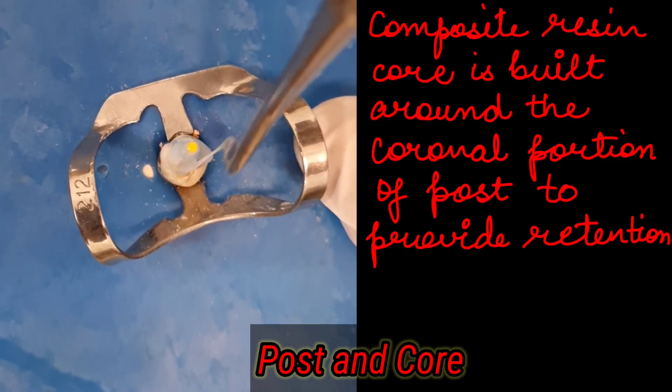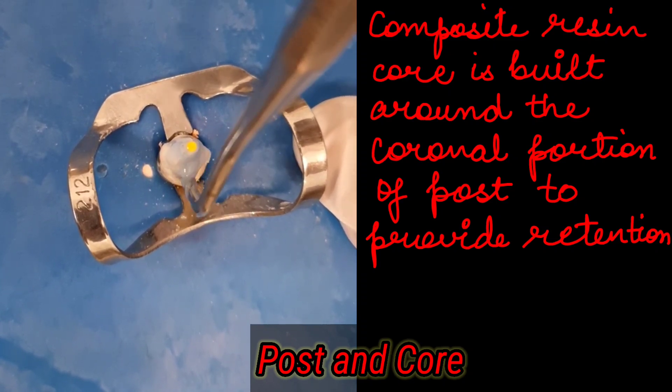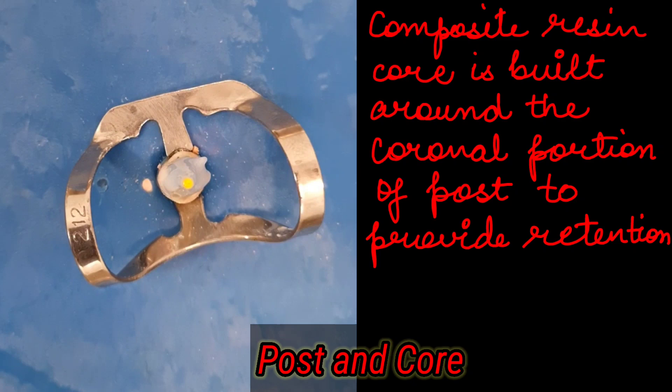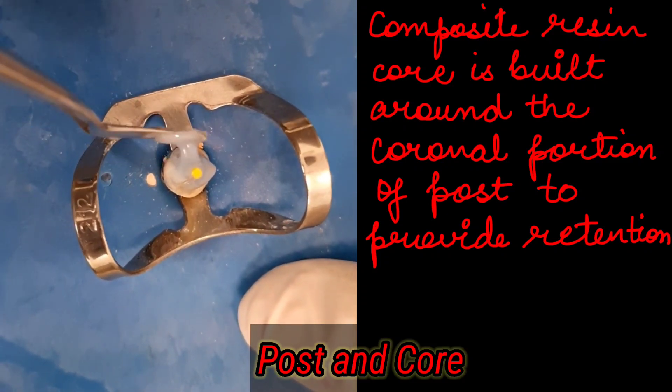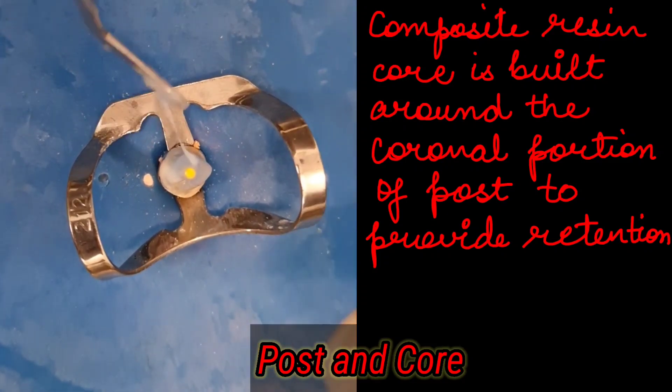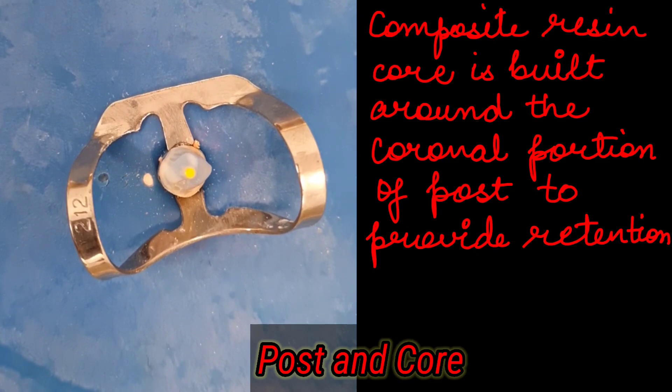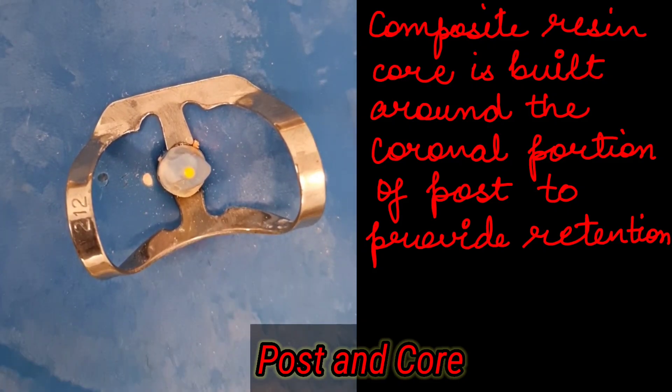Post and core are placed in the teeth that have already had the root canal and then only for those who have large portion of natural tooth structure missing we go for post and core. You can either use the custom or in this video we are demonstrating a fiber post which is a very simple procedure and very less time consuming because you can do it in a single sitting.